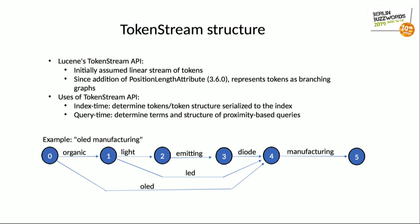Uses of the token stream API: at index time, it's used to determine the tokens and token structure serialized to the index. At query time, it's used by various query parsers to construct the structure of queries that are run against the index. For example, OLED manufacturing would be indexed or parsed for query purposes as organic light emitting diode manufacturing, or organic LED manufacturing, or OLED manufacturing.